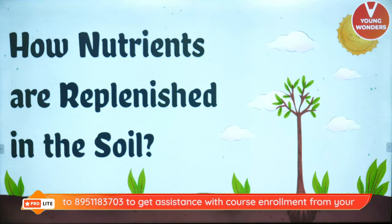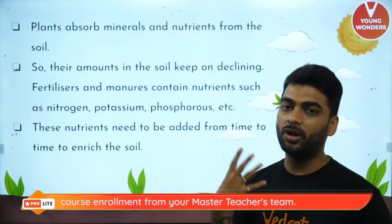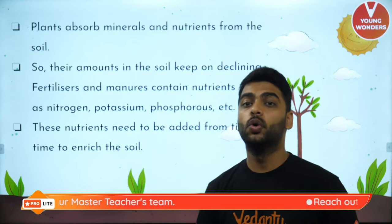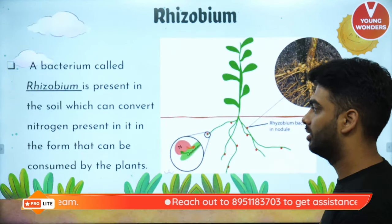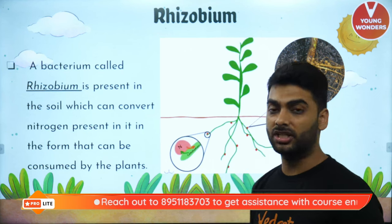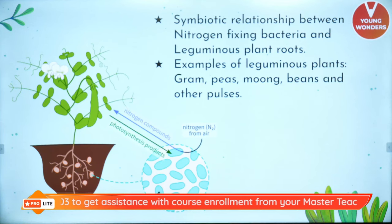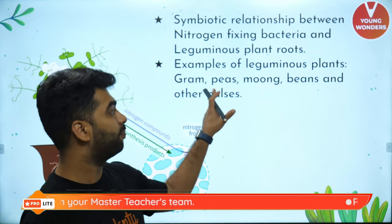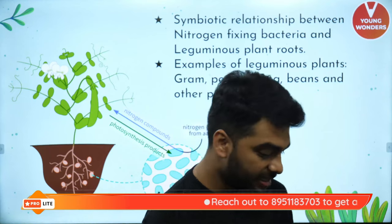Plants absorb minerals and nutrients from the soil, which keep getting reduced over time. So farmers practice crop rotation or grow leguminous plants whose root nodules contain rhizobium, which replenishes nitrogen in the soil — this process is also called nitrogen fixation. Examples of leguminous plants are gram, peas, moong, beans, and other pulses.